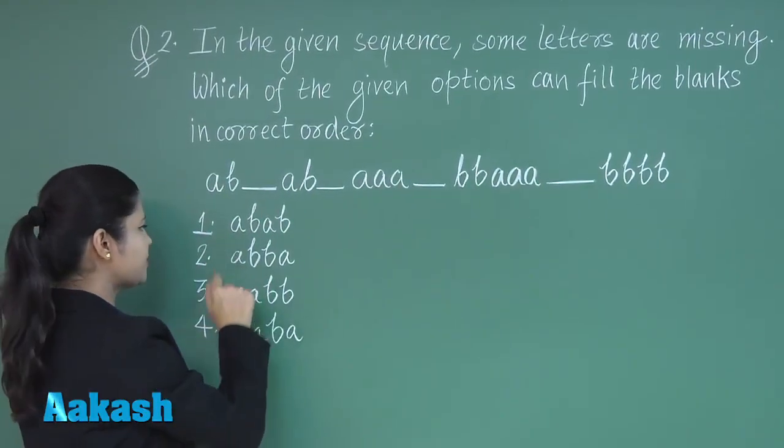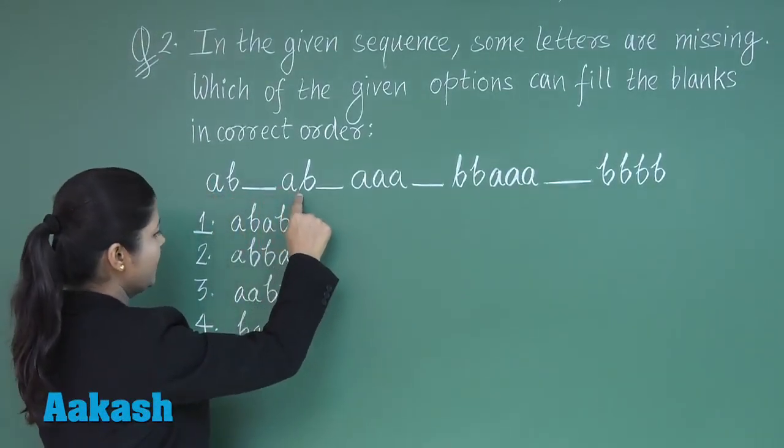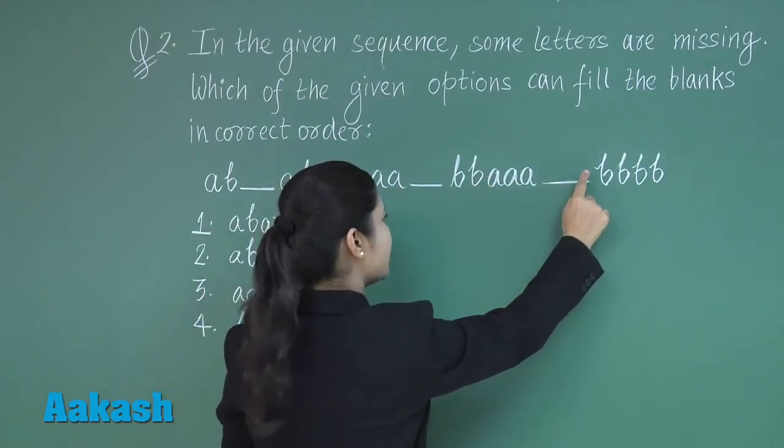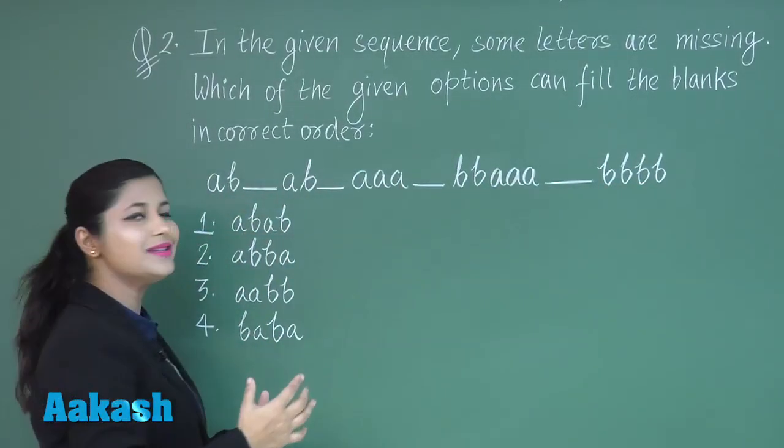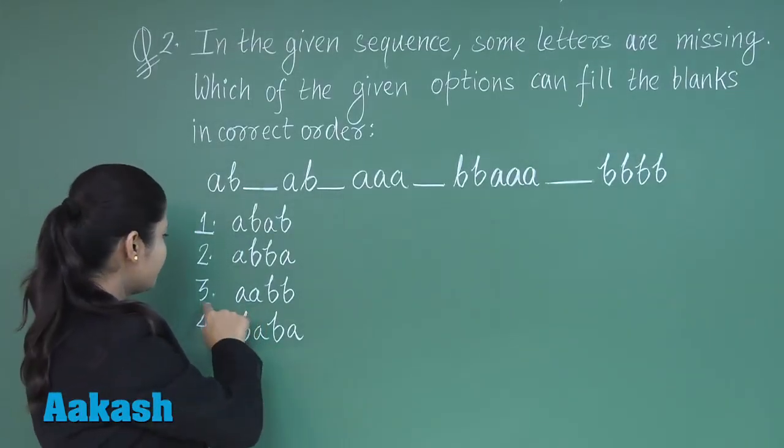When we substitute option number two here, you observe a b a a b b, then triple a, then triple b, then four times a, then four times b. So students, this seems to be a meaningful pattern.